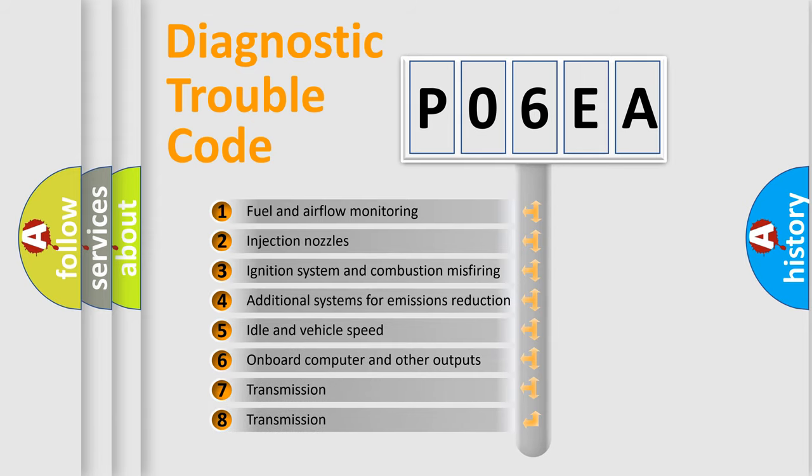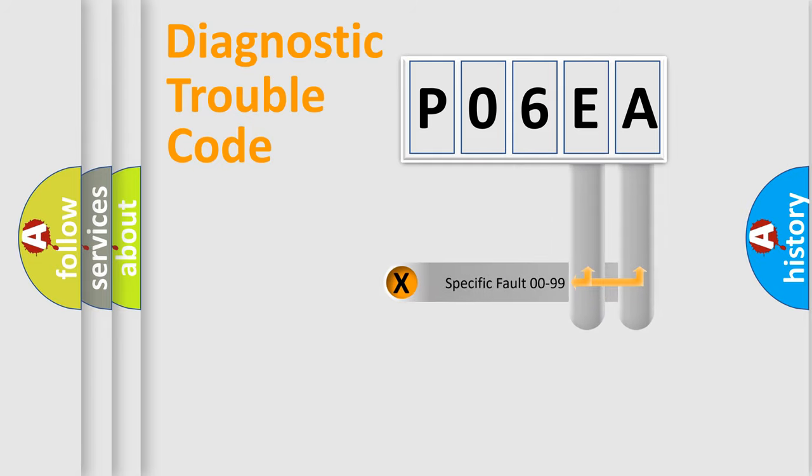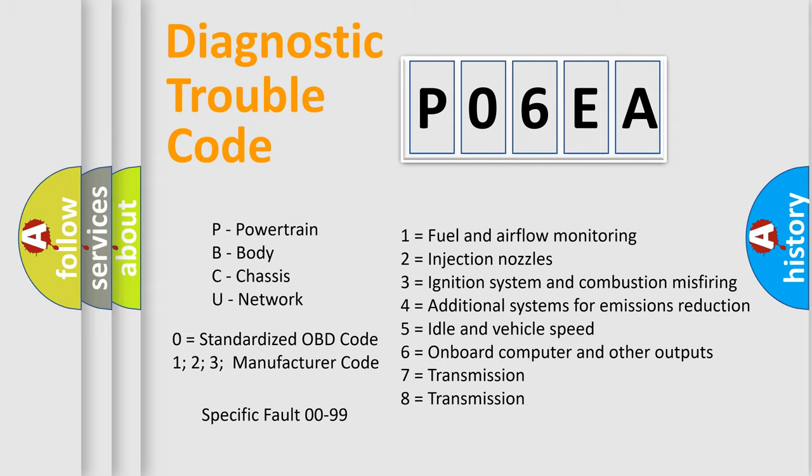The distribution shown is valid only for the standardized DTC code. Only the last two characters define the specific fault of the group. Let's not forget that such a division is valid only if the second character code is expressed by the number zero.